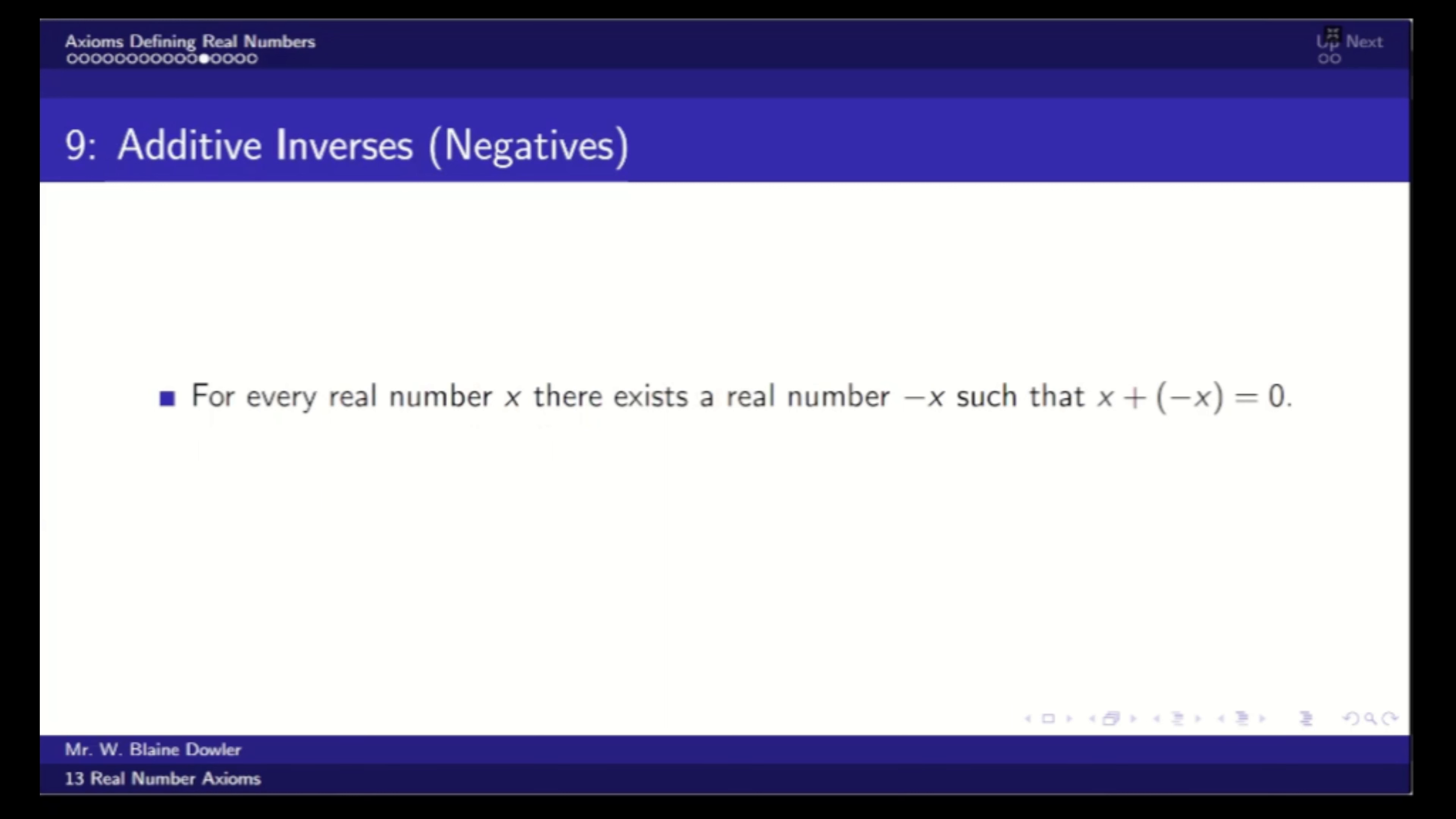So axiom number 9, additive inverses or negatives. For every real number x, there exists a real number negative x, such that when you add them, the sum is 0. a minus b is shorthand for a plus the negative of b. Subtraction is not its own operation in the views of a formal mathematician.